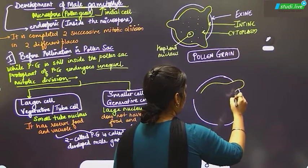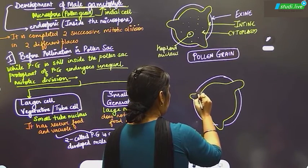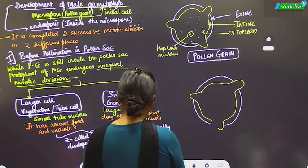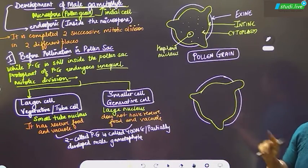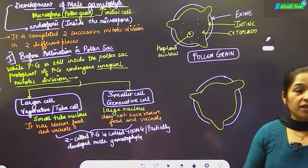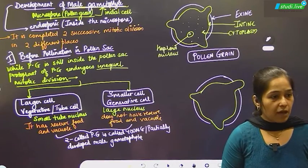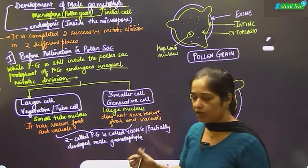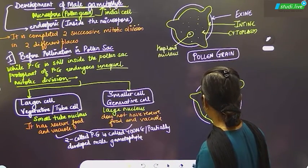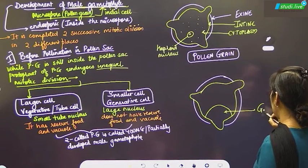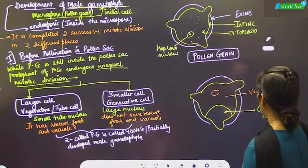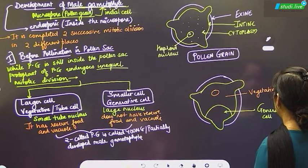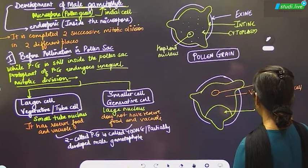First draw the exine, then the intine. While the pollen grain is still inside the pollen sack, the protoplast undergoes unequal mitotic division. We show the smaller cell in yellow — this is the generative cell. The larger cell is the vegetative cell, also called the tube cell, which contains the tube nucleus.